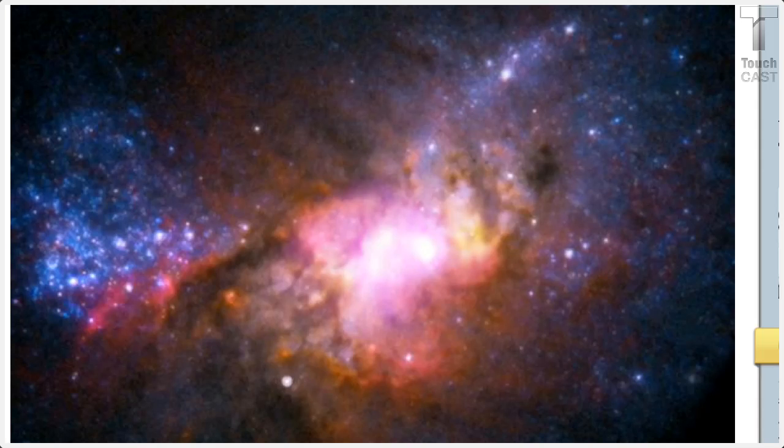The third type is called an irregular galaxy, and you'll notice that this is an example. It doesn't even really have a shape. It's just a cloud kind of looking piece. The Magellanic Cloud is going to be an example of that kind of galaxy.